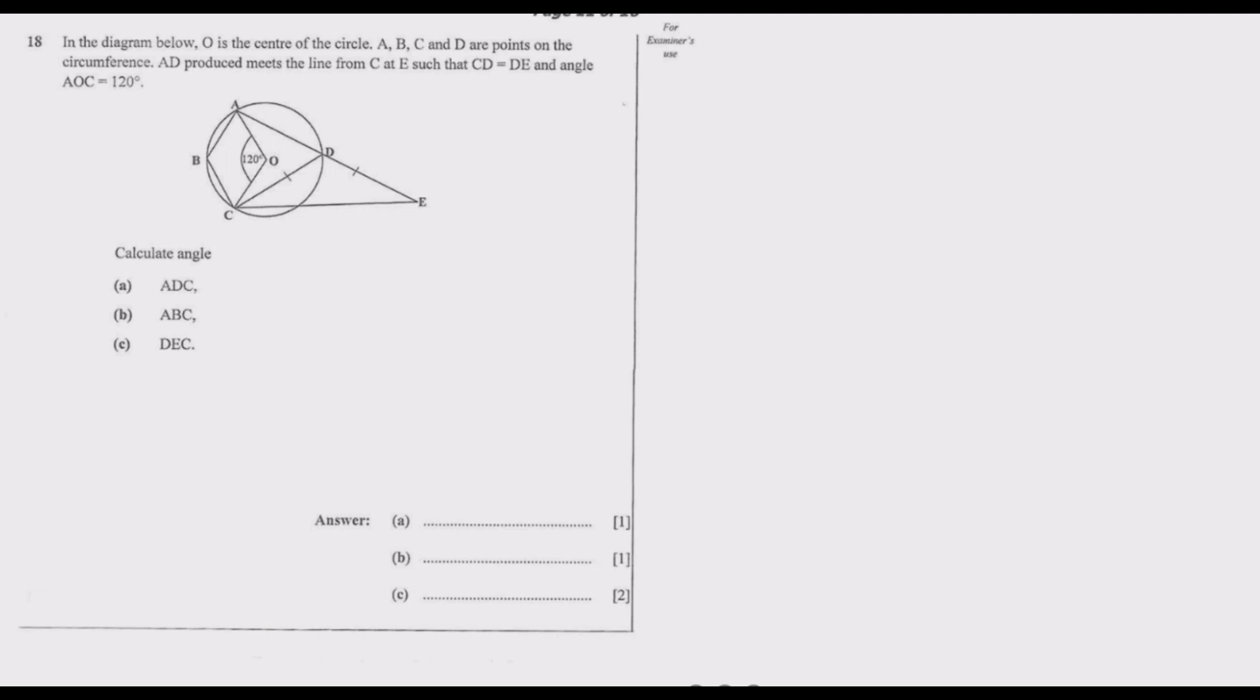The question reads: In the diagram below, O is the center of the circle. A, B, C, and D are points on the circumference. AD produced meets the line from C at E such that CD equals DE and angle AOC equals 120 degrees.